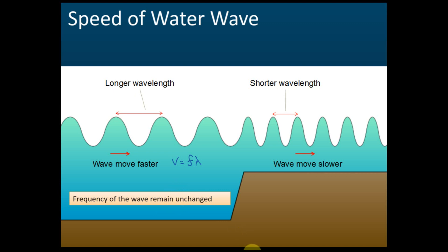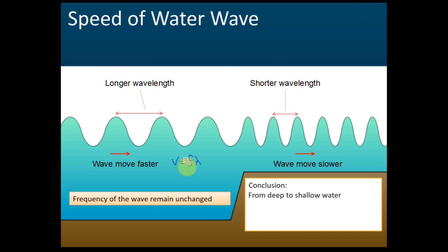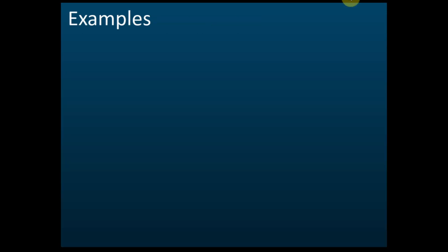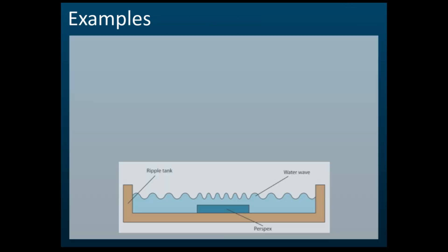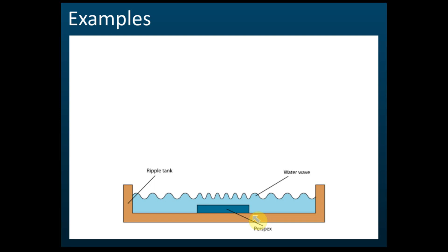So to summarize: from deeper to shallower regions, the speed decreases — faster in deep water, slower in shallow water. The wavelength also decreases — longer wavelength in deep water, shorter wavelength in shallow water. But the frequency remains unchanged.